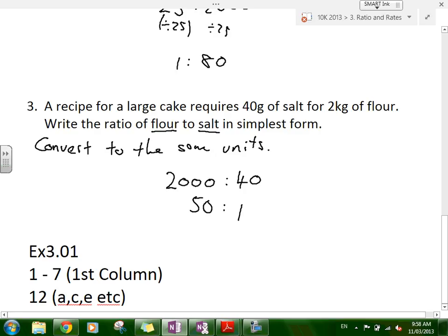So, exercise 3.01, 1 to 7, first column. And then question 12, ACE. And we've got 15 minutes. We should be able to get through a little bit more now. So, let's go ahead and do that.